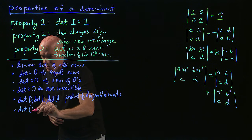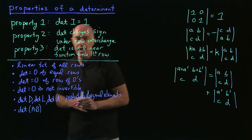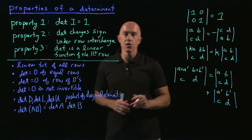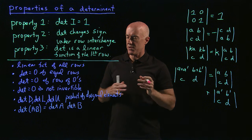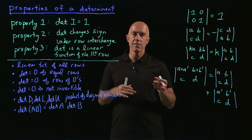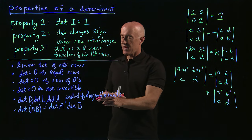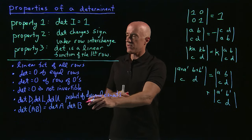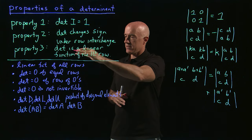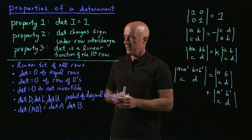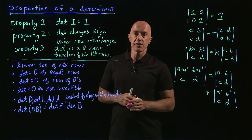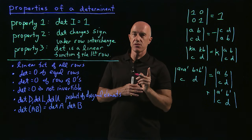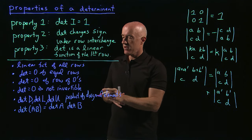The determinant of the product of two n by n matrices A and B equals the determinant of A times the determinant of B. This is a somewhat tricky theorem to prove, but it follows from properties one, two, and three and subsequent derived properties. An important warning: do not confuse this — the determinant of A plus B is not equal to the determinant of A plus the determinant of B. It only works for multiplication.